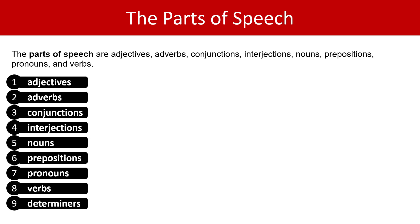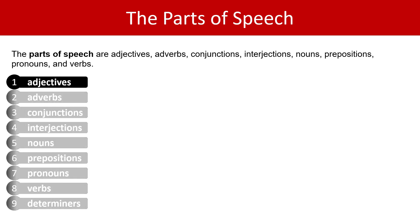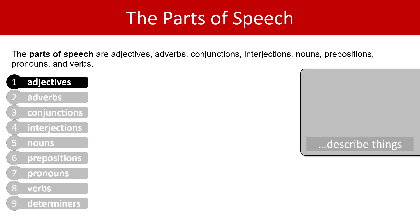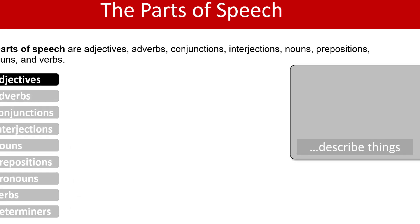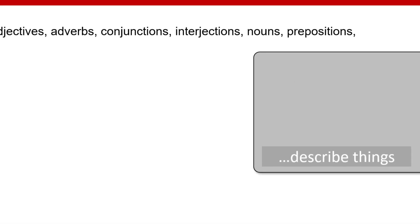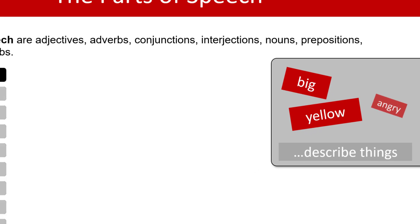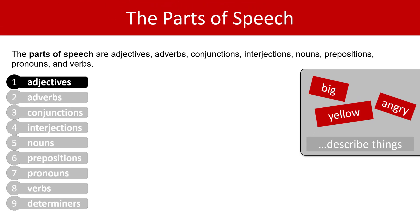Let's start with adjectives. Adjectives describe things. Here are some examples of adjectives: big, yellow, angry. You can see that these are describing words.